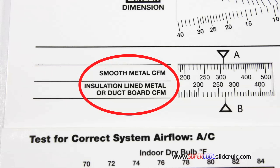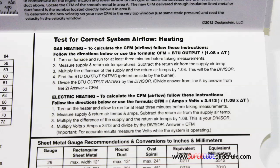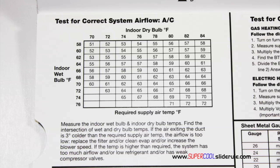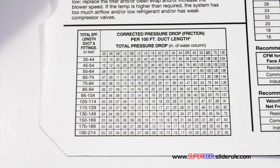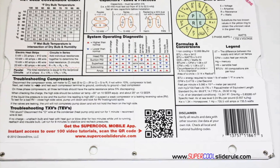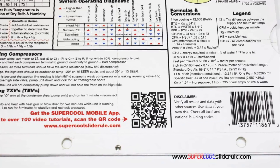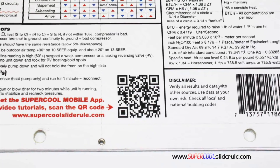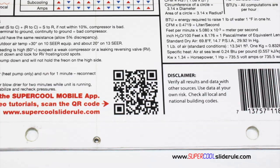The majority of technicians have never been taught that if the insulation is on the inside of the ductwork, you cannot size it with a regular duct calculator. It has step-by-step directions for determining airflow through a gas furnace, electric furnace, or an air conditioning unit. It has pressure drop multipliers for ductwork, as well as recommended velocities. And finally, scanning this QR code gives instant access to over 100 tutorials to assist the technician with every test and repair imaginable.